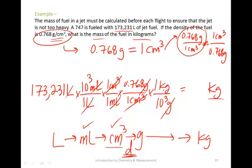Well, before I do that, just make sure my kilograms are the units I want. Everything else cancels out. Great. 173,231 times a thousand. All ones times 0.768 divided by a thousand. And that will give me an answer of 133,041 kilograms.